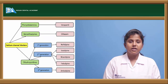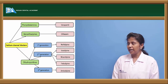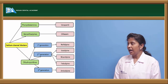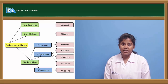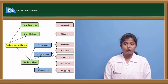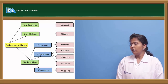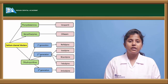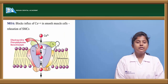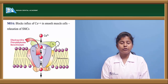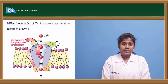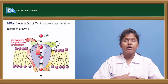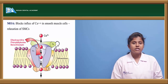Calcium channel blockers are classified into phenylalkylamines, benzothiazepines, and dihydropyridines. Verapamil belongs to phenylalkylamines, diltiazem to benzothiazepines. Dihydropyridines are further divided: first-generation includes nifedipine, second-generation includes isradipine, nicardipine, and felodipine, and third-generation includes amlodipine. These drugs block calcium entry into the cell, preventing depolarization and smooth muscle contraction, thereby causing smooth muscle relaxation.